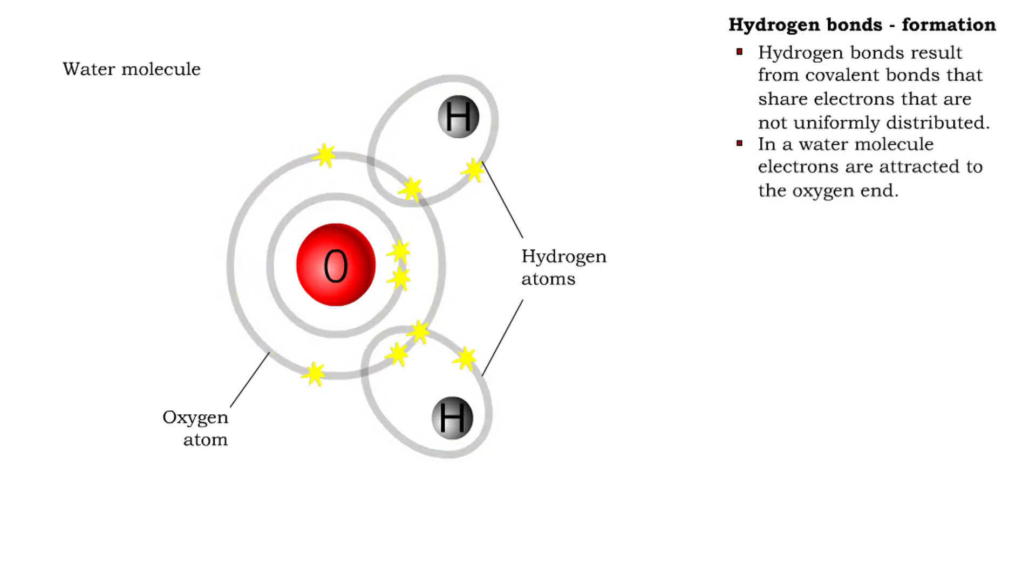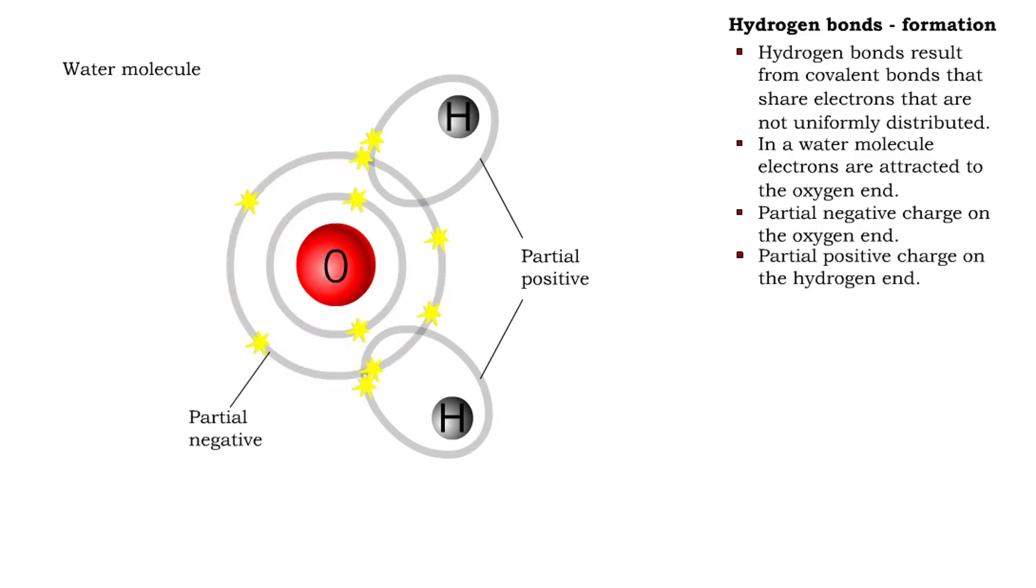The electrons are quite strongly attracted by the oxygen part of the molecule. This results in the oxygen end of the molecule having a slight negative charge, while the hydrogens have a slight positive charge.